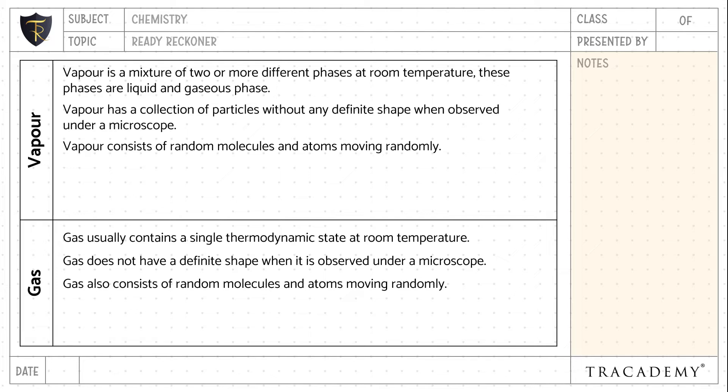Vapor is not a state of matter, unlike gases, whereas gases are a state of matter.